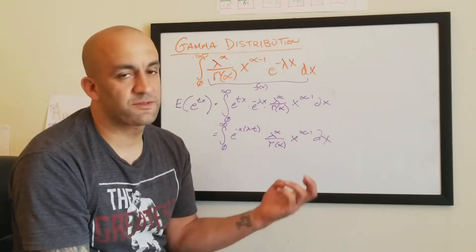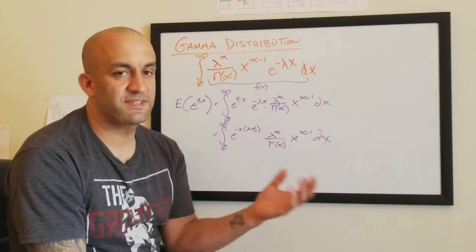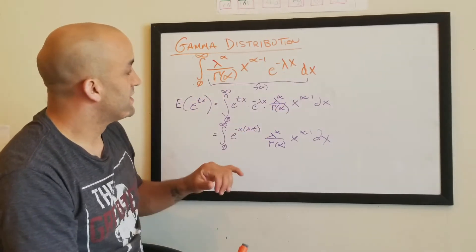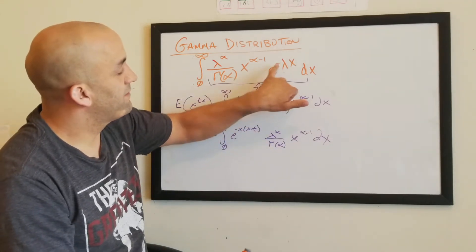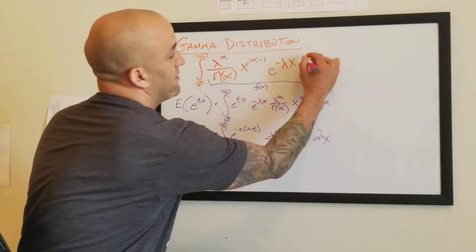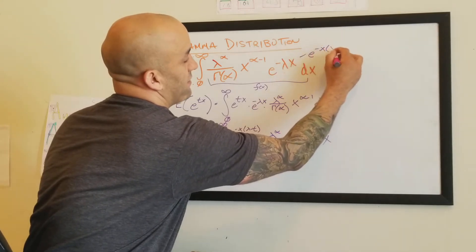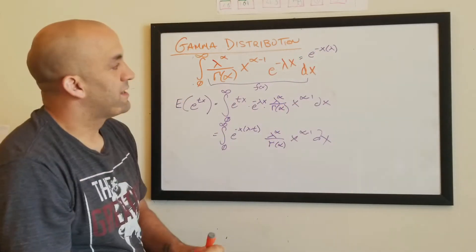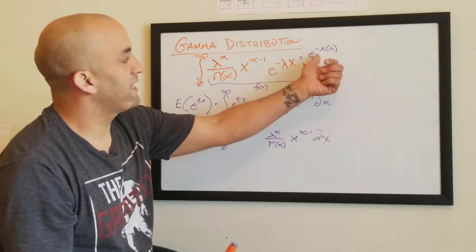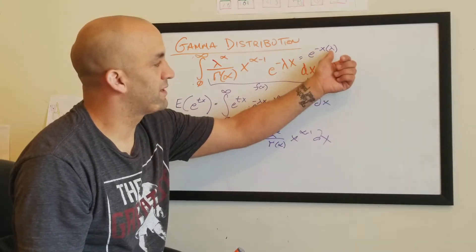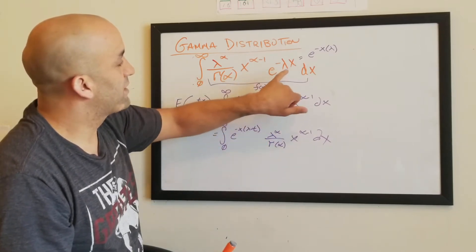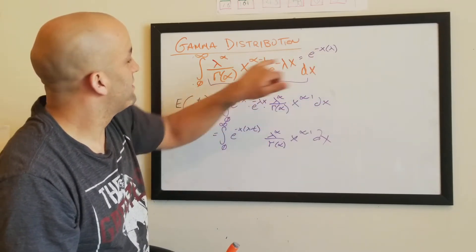Now what we're going to do is use kernel matching. Do we see something that kind of looks like the kernel of this? This right here is the kernel. Over here we can rewrite this as e to the negative x times lambda. That's important because we've got e to the negative x times some quantity, and right here we've also got e to the negative x times some quantity.